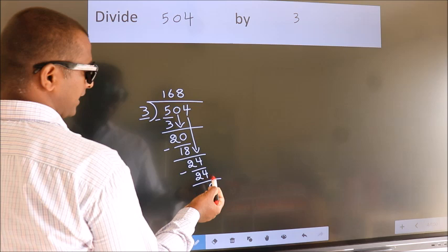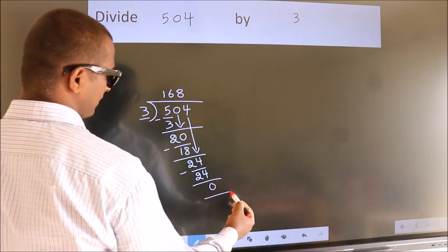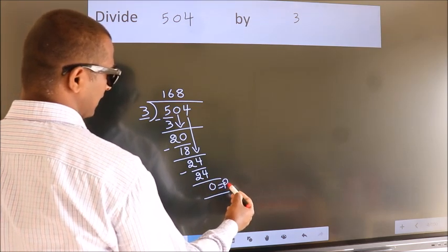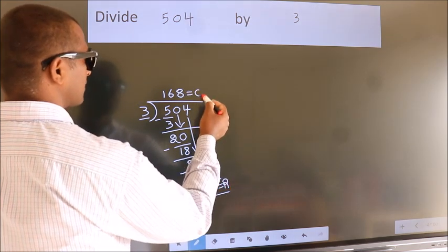No more numbers to bring it down. So, we stop here. This is our remainder. This is our quotient.